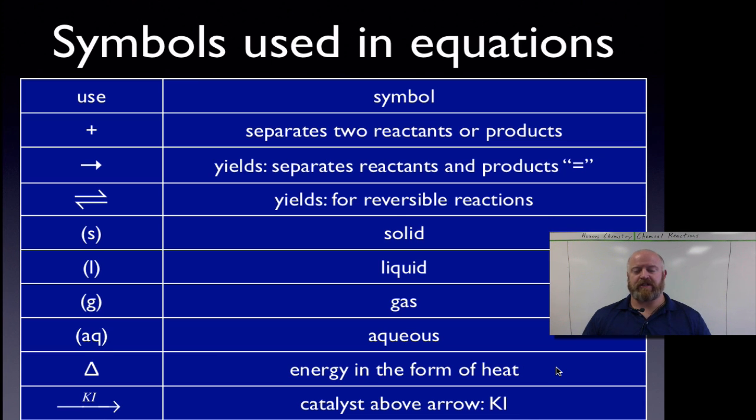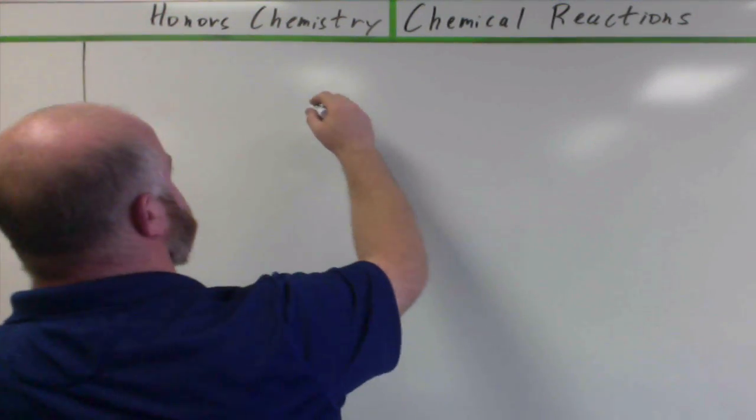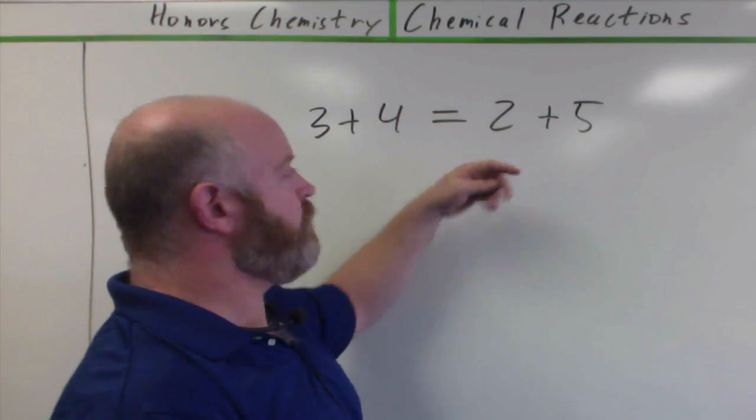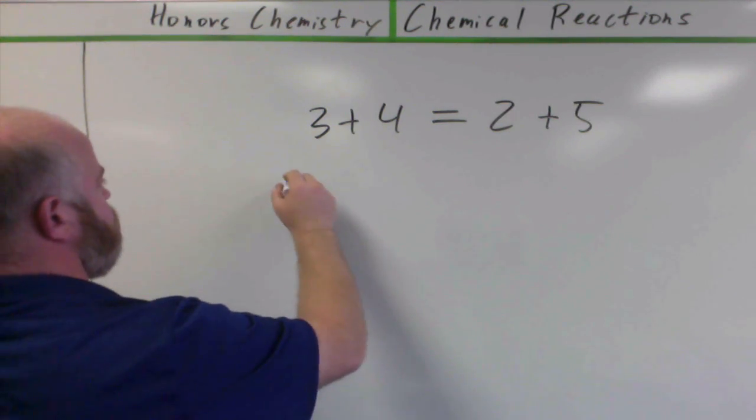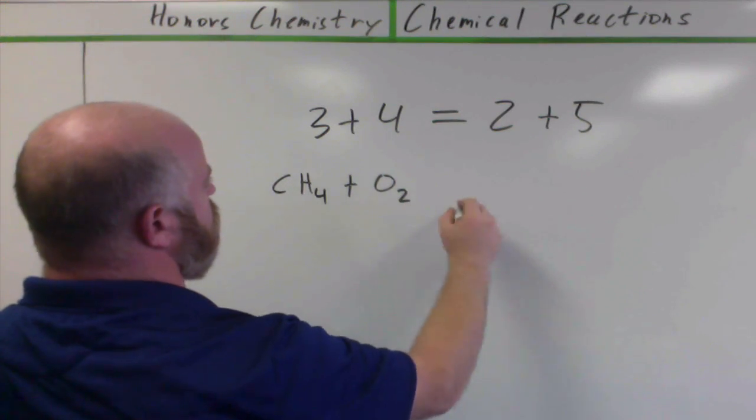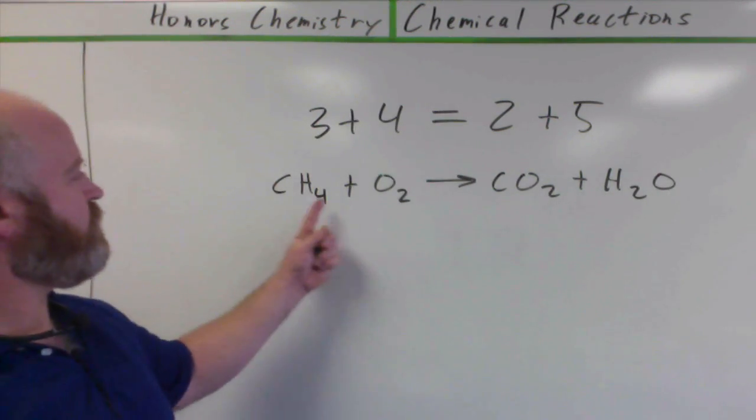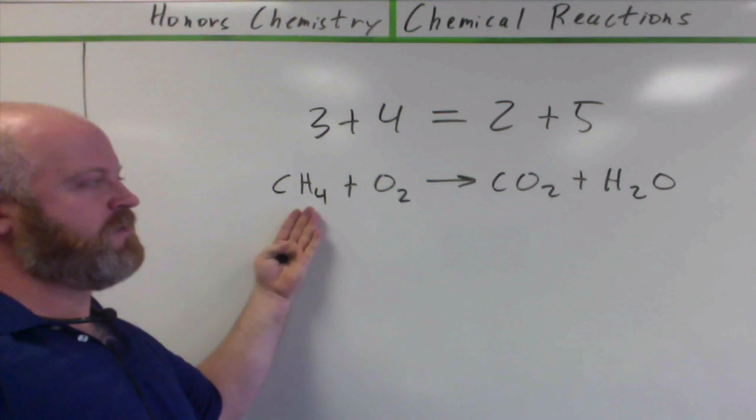So here's a table of all the different symbols that you're going to run across in the next few months in our class. If there's anything additional that's not on here, we'll cover it as we hit them. But we're going to walk through each one together. First of all, we have our plus sign. Plus sign is used anywhere in equation, very much like you'd use it in a math class where you'd use it to separate two different reactants or two different products from each other. So it's kind of like in math where you say three plus four equals. So if we have the plus sign, we say like three plus four equals two plus five. Very much the same in chemistry. We could say CH4 plus O2 makes CO2 plus H2O. So it's used to separate two different chemicals on the reactant side or the product side.